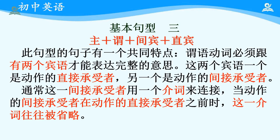那么现在让我们来看第三个基本句型：主语加谓语加间接宾语和直接宾语的结构。主谓宾只有一个宾语，而第三种类型的句子，其谓语动词必须要跟两个宾语才能够表达完整的意思。这两个宾语，一个是动作的直接承受者，另一个则是动作的间接承受者。通常情况下，间接承受者用一个介词来连接；当间接承受者在直接承受者之前时，这一介词往往被省略。